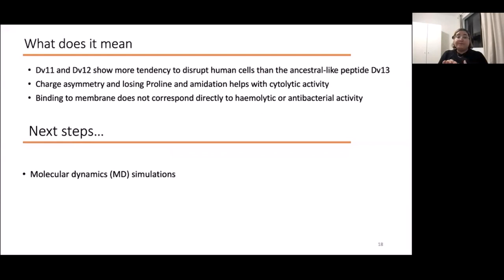So what does it mean? DV11 and DV12 show more tendency to disrupt human cells than the ancestral-like peptide DV13. Charge asymmetry and losing proline and amidation helps with cytolytic activity. Binding to membrane does not correspond directly to hemolytic or antibacterial activity, so I'm still trying to understand how they are interacting with membranes. Next, I'm going to do some MD simulations to see how they would act differently when in the presence of membrane.